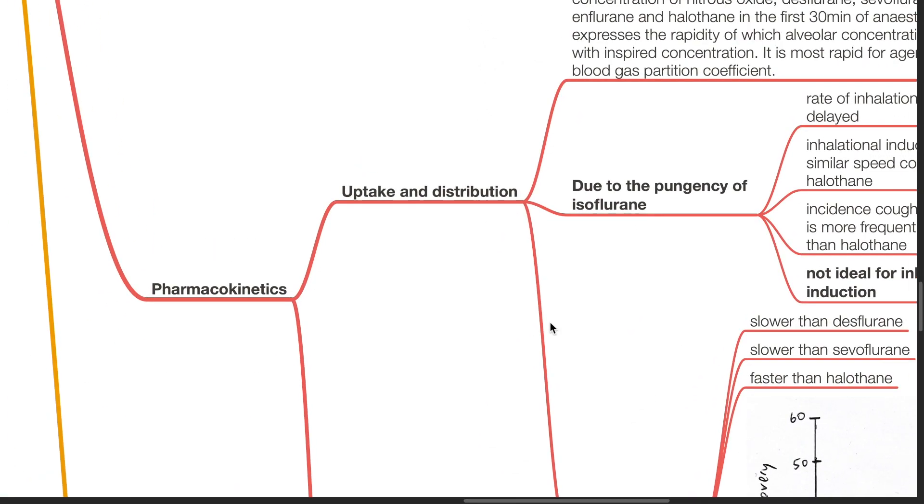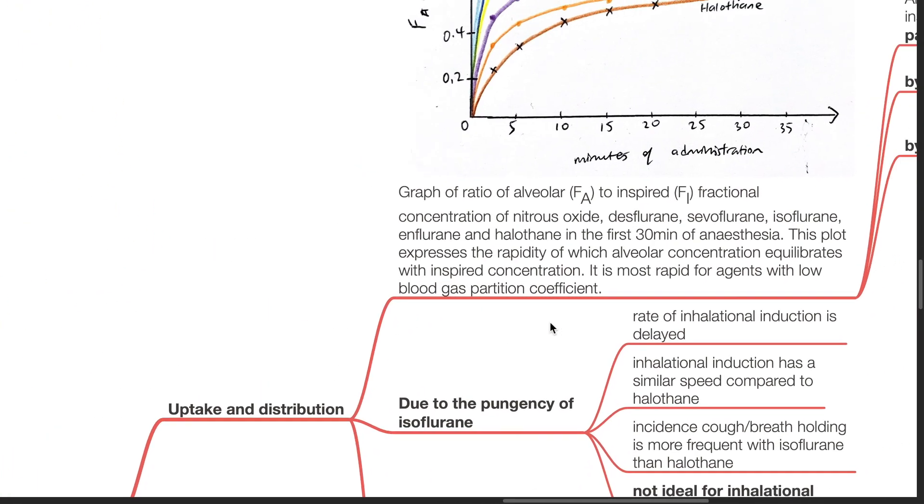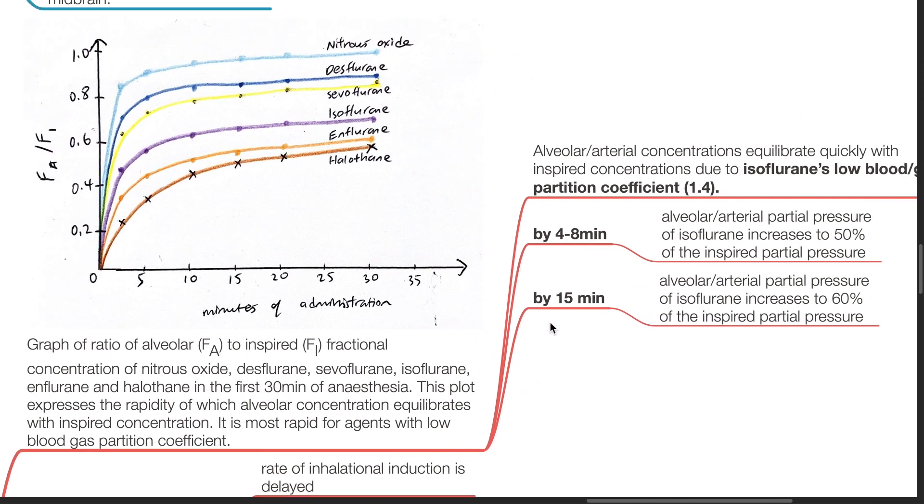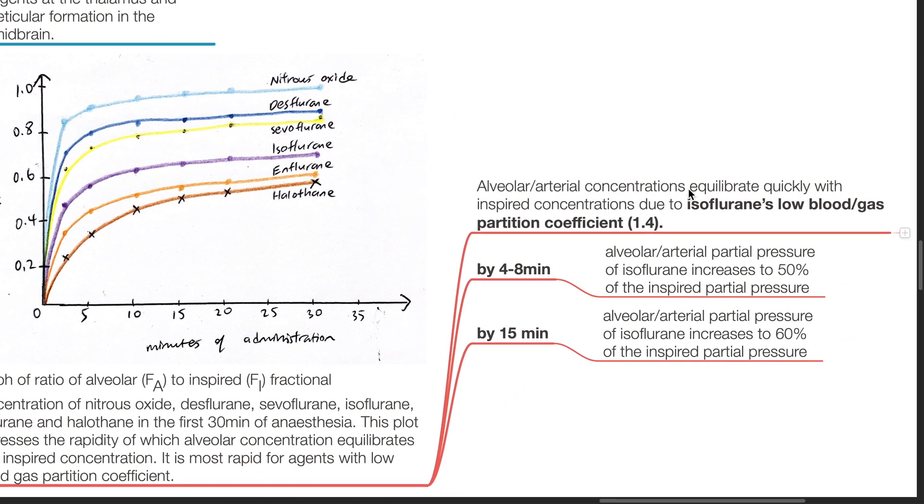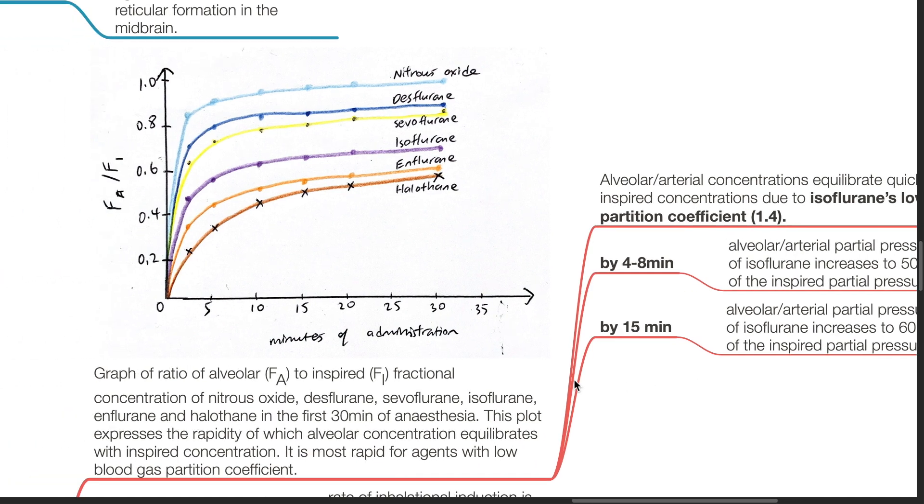Pharmacokinetics. Uptake and distribution. Alveolar arterial concentrations equilibrate quickly with inspired concentrations due to isoflurane's low blood gas partition coefficient of 1.4. By 4 to 8 minutes, alveolar arterial partial pressure of isoflurane increases to 50% of the inspired partial pressure. By 15 minutes, the alveolar arterial partial pressure of isoflurane increases to 60% of the inspired partial pressure.